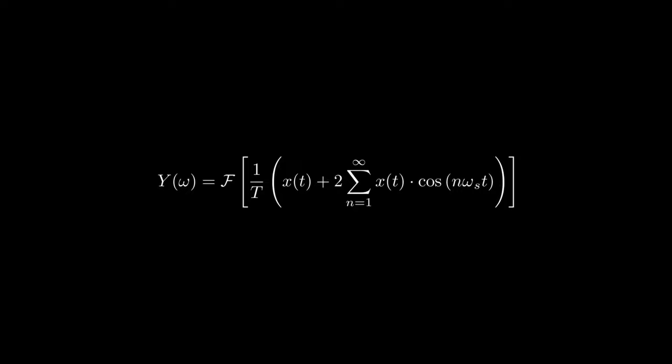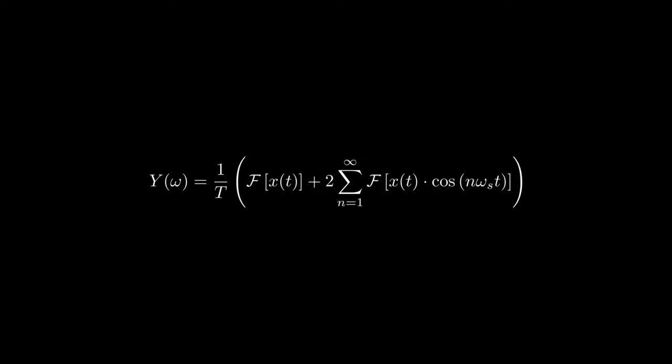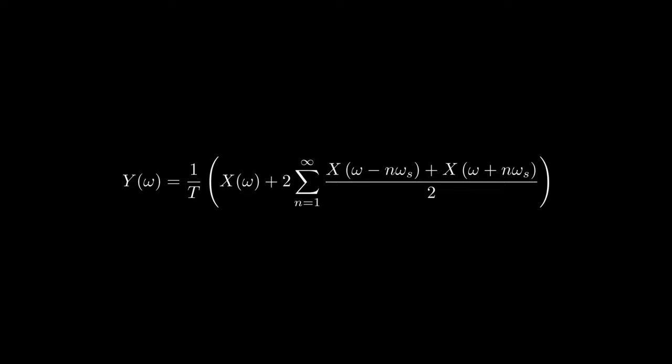Doing so for the entire sum will give us a periodic extension of the original Fourier transform with a period of omega s. So there we have it! This is the FT of a discrete signal.